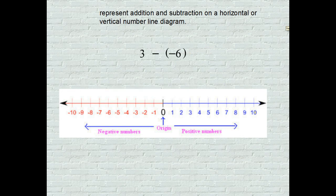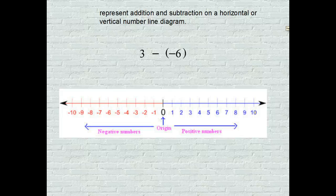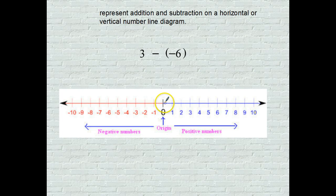The third example: now the negative is with the number on the right instead of on the left. Positive 3 take away a negative 6. So we go from 0 to positive 3 with the arrow.